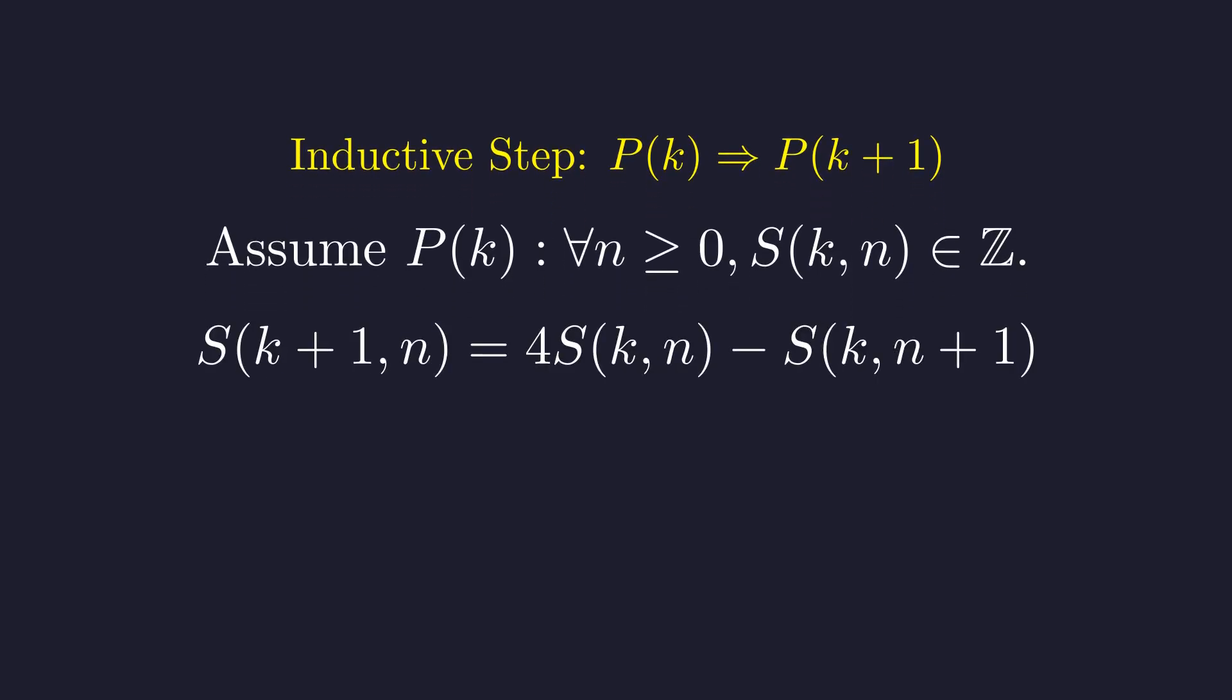Now here's where our recurrence relation comes to the rescue. We can rearrange it to express any entry in row k plus 1 in terms of entries from row k. Now look at what we have here. By our inductive hypothesis, both of these terms are integers.